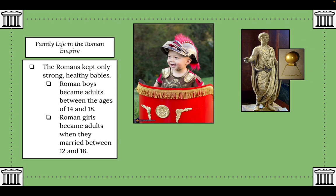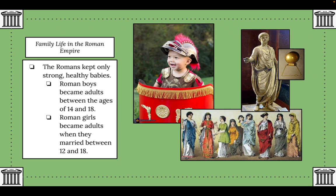What just appeared here is called a bulla — a good luck charm placed around a baby's neck when they were nine days old, worn throughout childhood. Between ages 14 and 18, a Roman boy celebrated becoming a man by offering his bulla along with his childhood toys and clothes to the gods. Girls, however, simply became adults when they married, between ages 12 and 18.